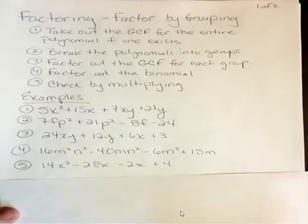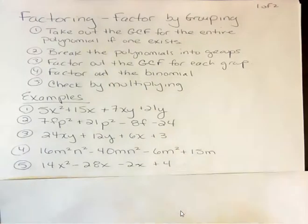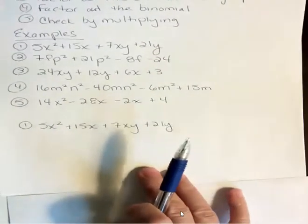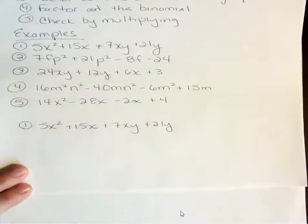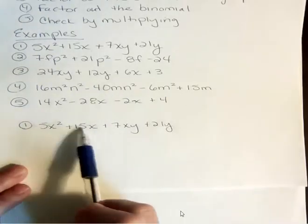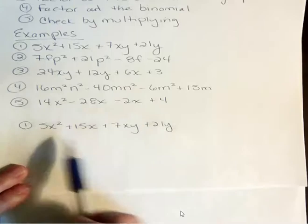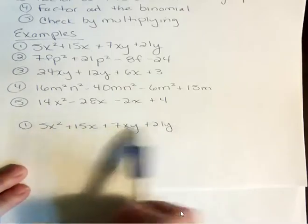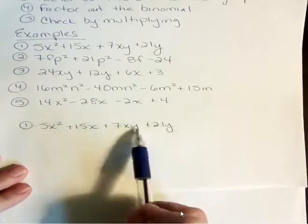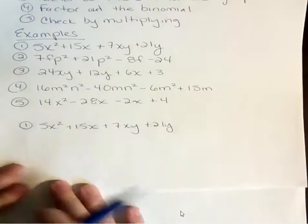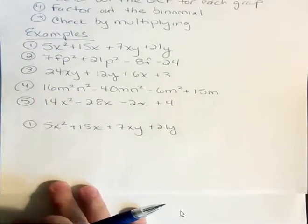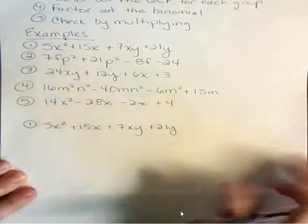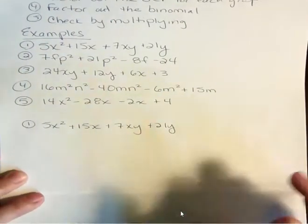Here are our examples. We're going to do the first example. The first thing I'm asking myself is: is there a common factor for the entire polynomial? I can see that 5 goes into some terms, but not all. There's an x in three of these terms, but not all. There's a y here but no y's there. So there's no common factor for the whole polynomial. I'm going to break this into groups — in the beginning, when doing factor by grouping, the groups are usually set up for you.